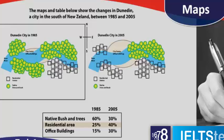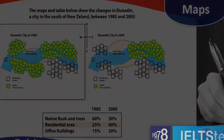Similar to a pie chart, make sure you talk about everything in 1985 and then everything in 2005. They have separate images, so they want you to talk about the images separately first, and then you can compare.